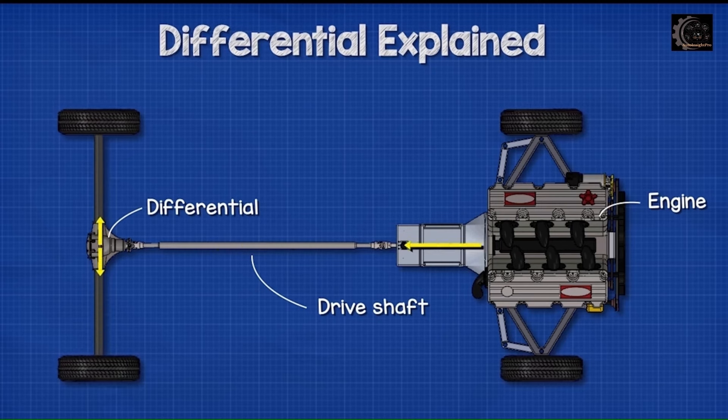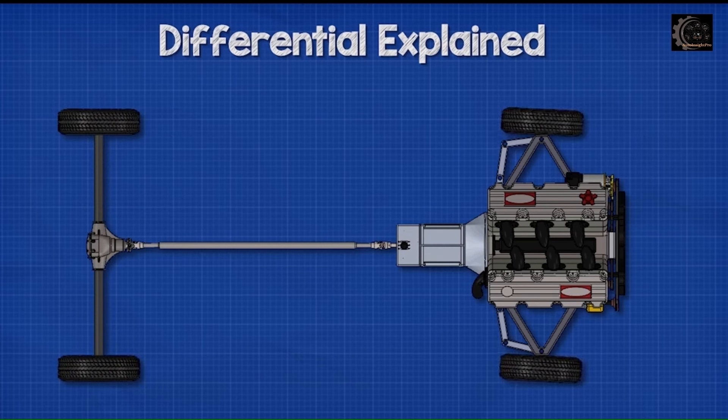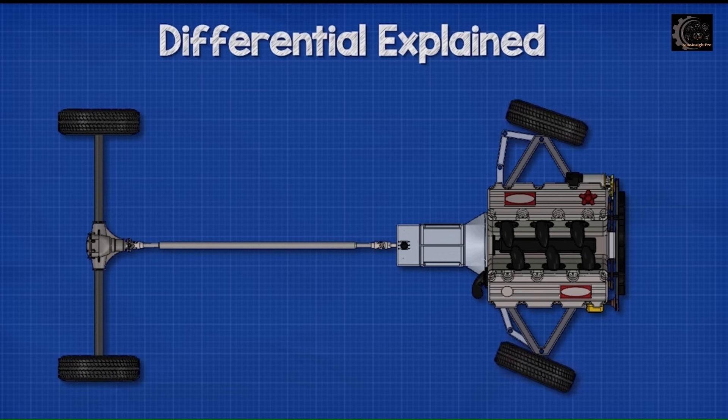To better understand how the gears work together to create different wheel speeds, here are visual explanations. When a car moves in a straight line, the engine provides power through the driveshaft into the differential, which divides the power between the two rear wheels. This propels the car along and so the wheels will all rotate at the same time at the same speed.